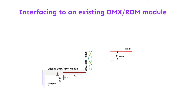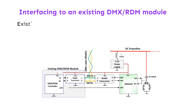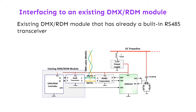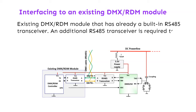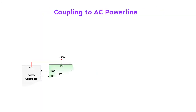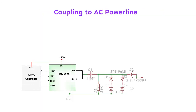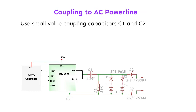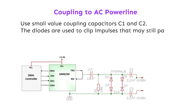When interfacing to an existing DMX-RDM module that already has a built-in RS-485 transceiver, an additional RS-485 transceiver is required to translate the signals to TX and RX 3.3 volt logic. For coupling to an AC power line, use small-value coupling capacitors C1 and C2. Diodes are used to clip impulses that may still pass through the capacitors.